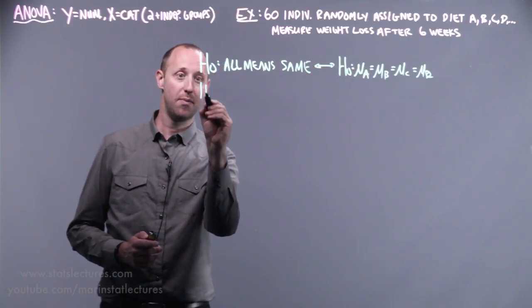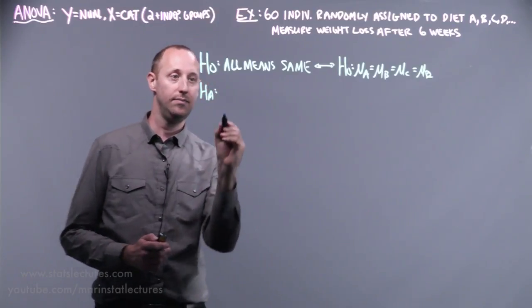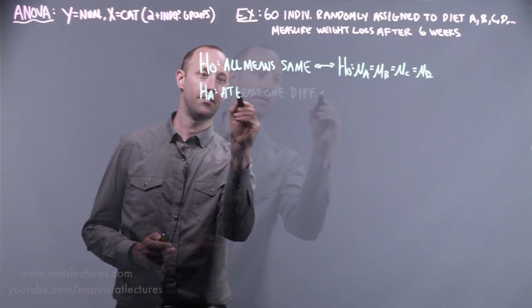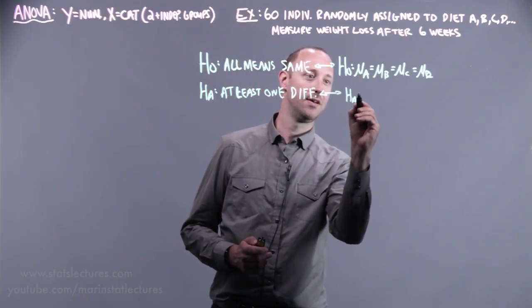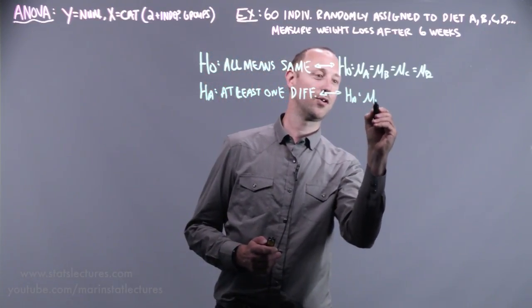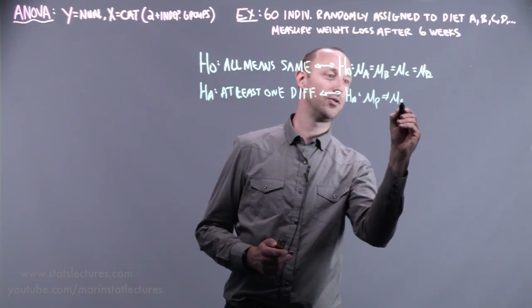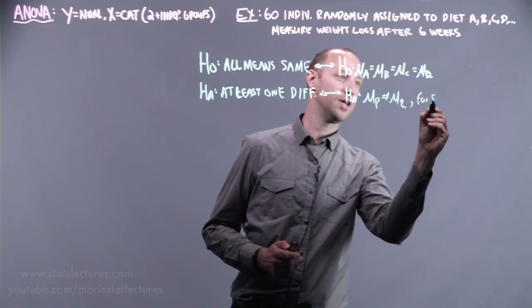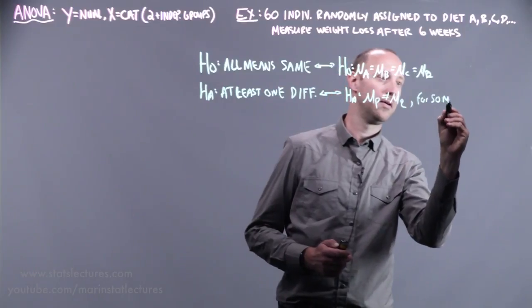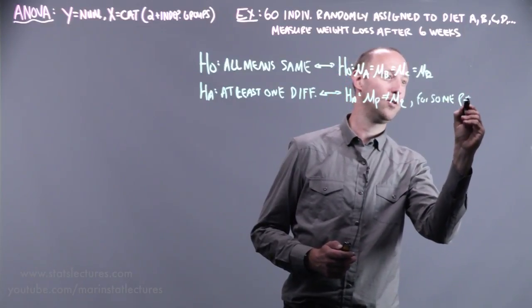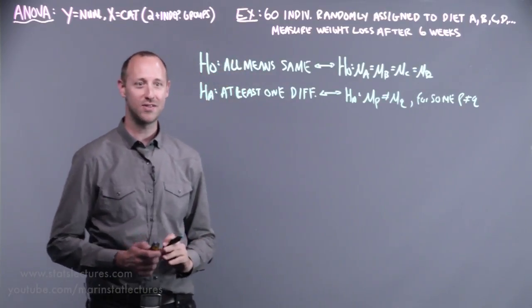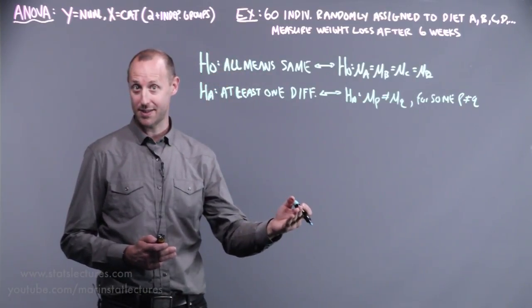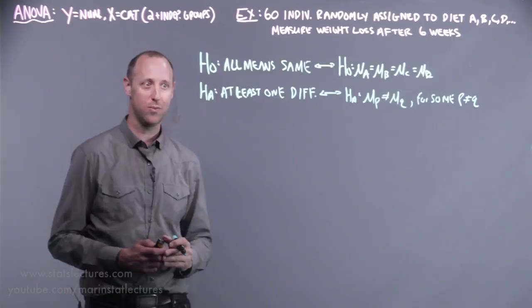And an alternative hypothesis that at least one differs. Sometimes this is written: the mean for group P is not equal to the mean for group Q for some P not equal to Q. This is just a notation-y way of saying at least one of the diets is different than the others in terms of mean weight loss.